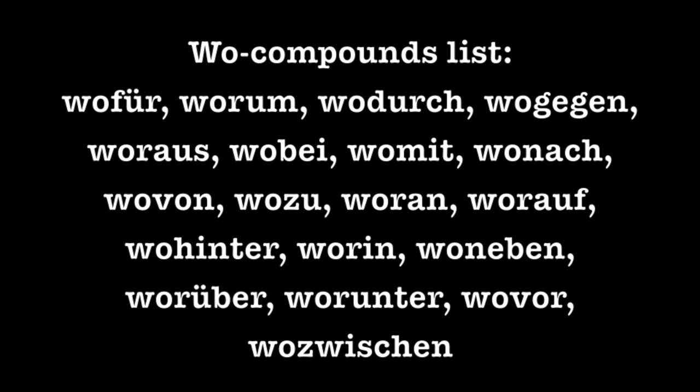The full list of Wo-compounds: Wofür (for what?), Worum (around what?), Wodurch (through what / through what means?), Wogegen (against what?), Woraus (out of what?), Wobei (with what?), Womit (with what?), Wonach (after what?), Wozwischen (between what?), Wovon (from what?), Wozu (to what?), Woran (on what — used with vertical things), Worauf (on what — used with horizontal things), Wohinter (behind what?), Worin (in what?), Woneben (next to what?), Worüber (over what?), Worunter (under what?), Wovor (before what / in front of what?), Wozwischen (between what?).